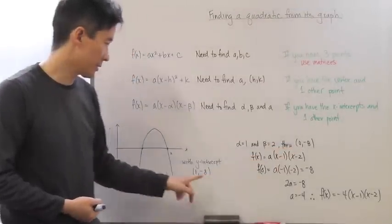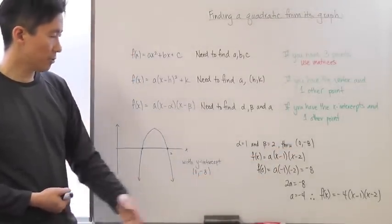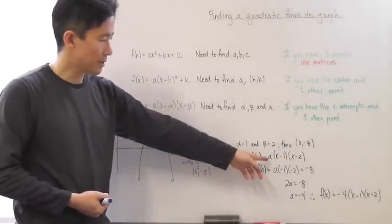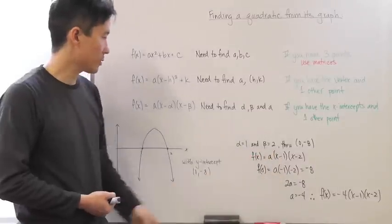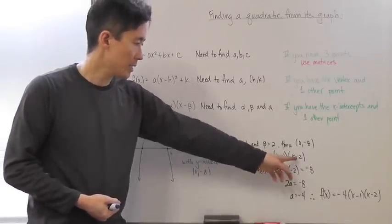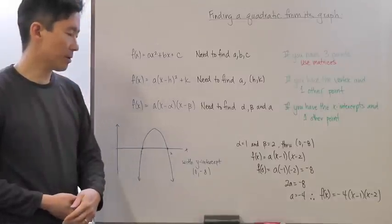And we also know that it's going to go through 0, negative 8. So, I can say that f(x) is going to be equal to a times (x - 1) because alpha is 1 and (x - 2) because beta is equal to 2.